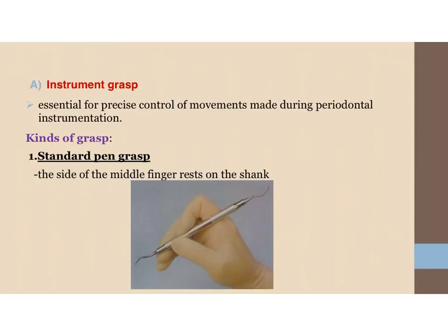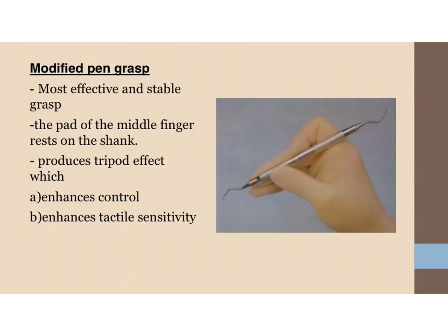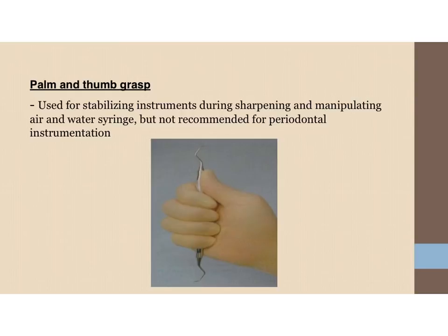Factors enhancing stability are instrument grasp and finger rest. The instrument grasp is essential for precise control of movement during periodontal instrumentation. Types of grasping include the standard pen grasp, where the side of the middle finger rests on the shank. The most popular and effective is the modified pen grasp, where the pad of the middle finger rests on the shank, producing a tripod effect which enhances control of the instrument and tactile sensitivity. The palm and thumb grasp is used for stabilizing instruments during sharpening and manipulating the air and water syringe, but is not recommended for periodontal instrumentation.